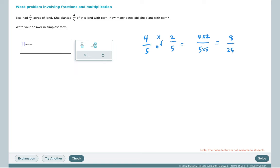So how many acres did she plant with corn? She planted eight-twenty-fifths of one acre with corn.